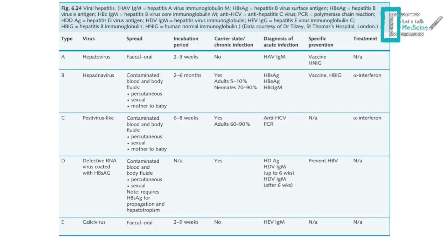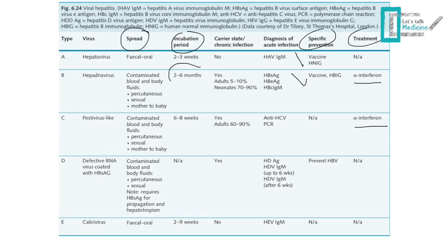Here we have a summary table about the viruses that cause hepatitis. The main points are the incubation period, mode of transmission, and treatment and prevention. For treatment: hepatitis A and E are self-limited diseases. Hepatitis B and C are treated with interferon alpha. To manage hepatitis D, you must manage hepatitis B. Vaccines are available only for hepatitis A and hepatitis B. The longest incubation period belongs to hepatitis B.